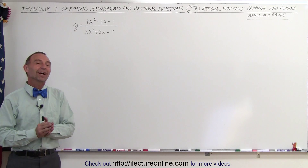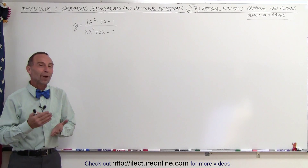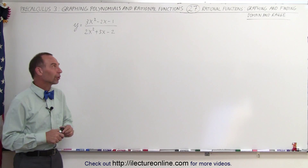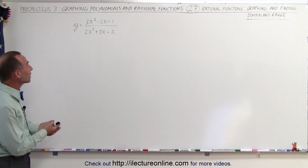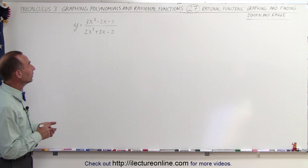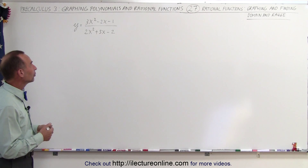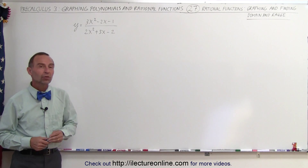Welcome to That Lecture Online. Here's our next example of how to graph a rational function. The function is y equals 3x squared minus 2x minus 1 divided by 2x squared plus 3x minus 2.